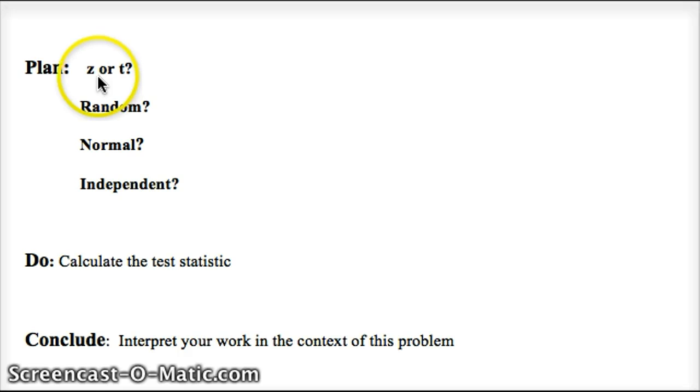From there, we will decide whether we're going to use z or t, depending on whether it's a proportion or a sample mean. We'll use t as long as we don't know the true standard deviation of the population. We'll check our three conditions: random, normal, and independent.